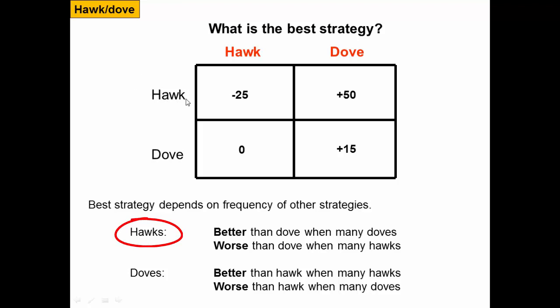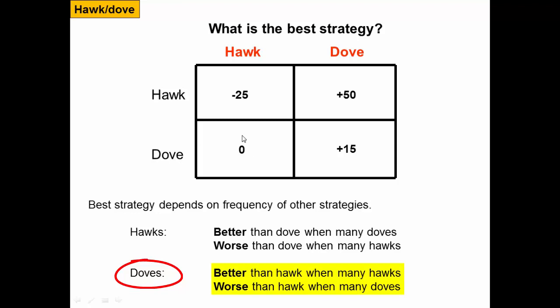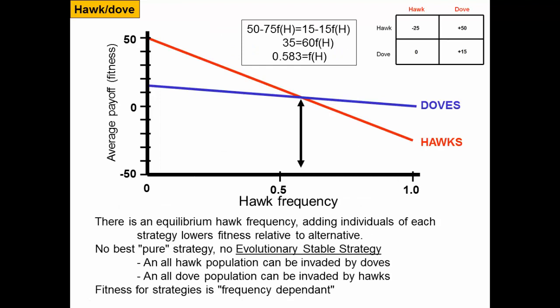The best strategy for individuals actually depends on the frequency of other strategies. The hawk strategy is better than dove when there are lots of doves, but worse when there are lots of hawks. The dove strategy is better than hawk when there are lots of hawks, but worse when there are lots of doves. To model this, we'll calculate the average payoff — which we can think of as fitness — and plot it against the frequency of hawks in the population.